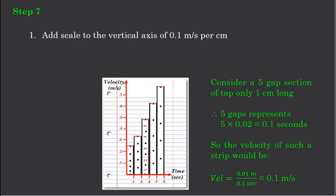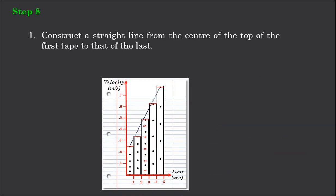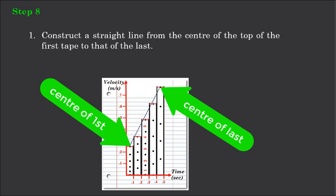The final step is to calculate the acceleration from this graph. Acceleration represents the gradient of a velocity time graph. If I draw a line from the centre of the first strip of paper to the centre at the top of the last bit of paper, I can get a nice average acceleration.